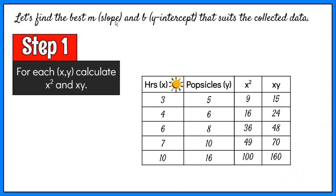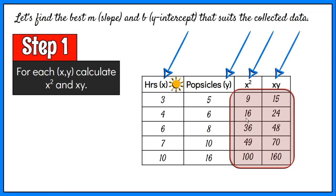Let's find the best m, or slope, and b, or y-intercept that suits the collected data. Step 1: For each xy, calculate x squared and xy. For the x squared column, we multiply the value in hours of sunshine by itself. For the xy column, we multiply each number of hours of sunshine with a popsicle sold.